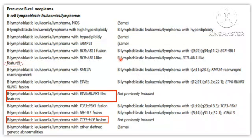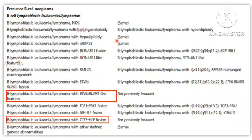Apart from these two new categories, there are a few minor changes. Previously this category was B lymphoblastic leukemia/lymphoma BCR::ABL1-like, but now they have added the word 'features.' Also, B lymphoblastic leukemia/lymphoma with hyperdiploidy as a separate entity now has the term 'high' added — B lymphoblastic leukemia/lymphoma with high hyperdiploidy.